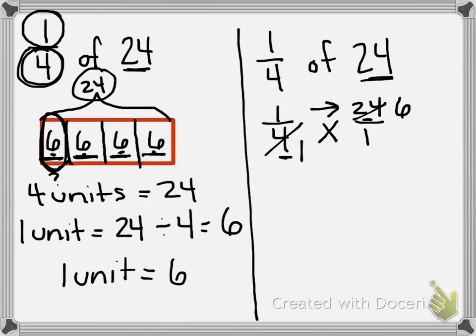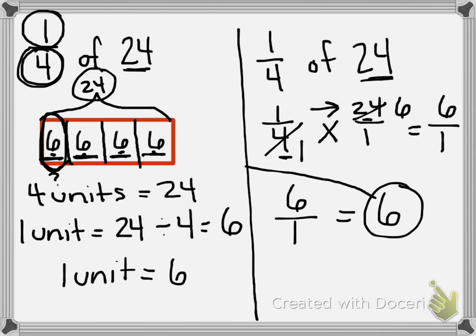Now when I multiply, I multiply going across. 1 times 6 equals 6, and 1 times 1 equals 1. The value of 6 over 1 equals 6. Again, 1 fourth of 24 equals 6, and if you look at our previous problem, we also found that the 1 unit equals 6.